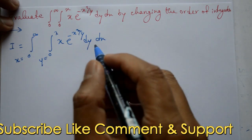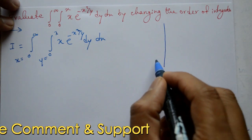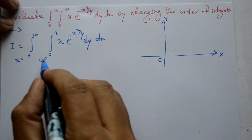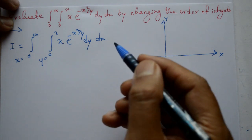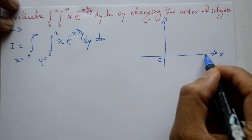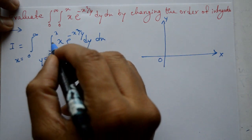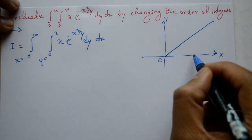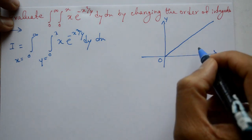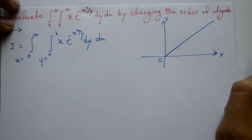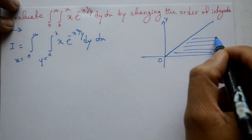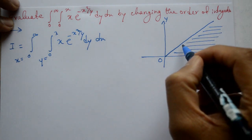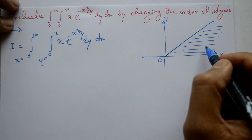Pehle diagram nikalenge, baad mein order change karenge. Diagram mein x-axis, y-axis, aur origin hai. First, y = 0 hai, jo x-axis pe hai. Baad mein y = x, exactly 45 degree line. So y goes from 0 to y = x, aur x goes from 0 to infinity. This area ko evaluate karna hai.